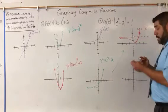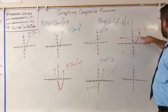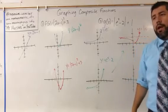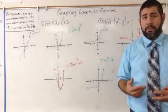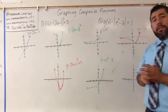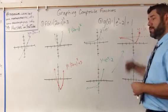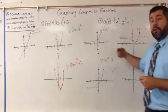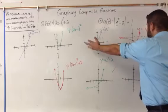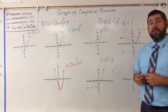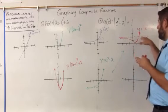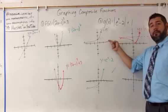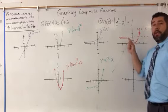Sometimes the question comes up: why can this graph cross the horizontal asymptote when we thought asymptotes can't be crossed? That's true for vertical asymptotes, but horizontal asymptotes can be crossed as long as they're not crossed as we approach infinity. Horizontal asymptotes have more to do with end behavior — what happens as x approaches positive infinity or negative infinity. It really has to do with what happens at the ends of the graph rather than in the middle.